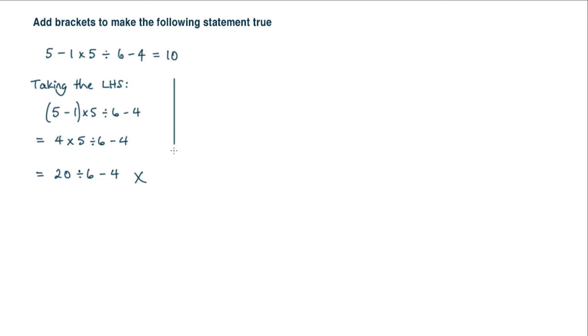So the next one I have to do then is to try another one. So we're going to take the left hand side again. And this time we've got 5 minus 1 multiplied by 5 divided by 6 minus 4. Now this time I could put the brackets around the end here, the 6 minus 4. So let's try that.